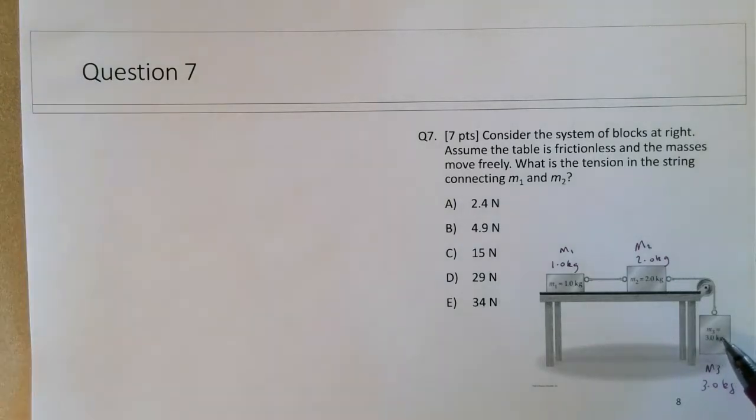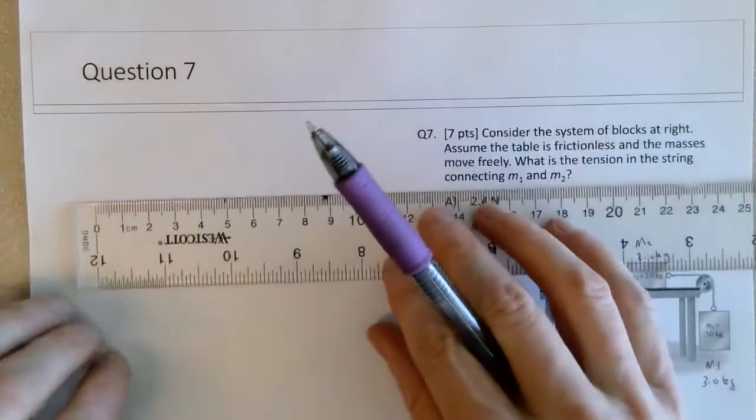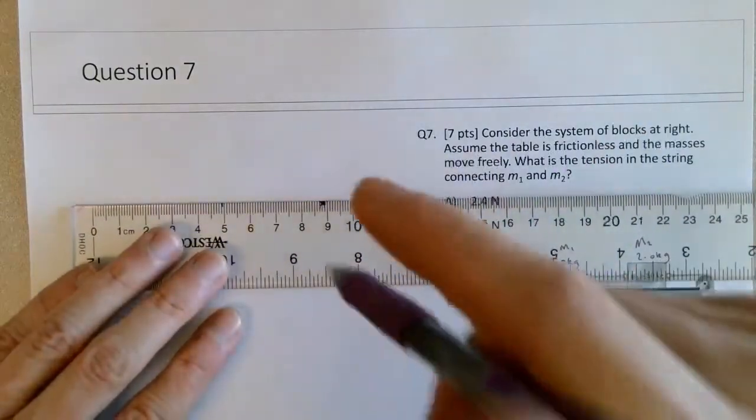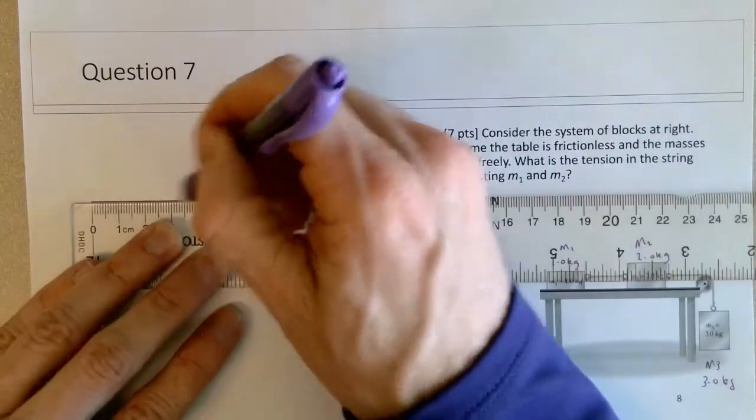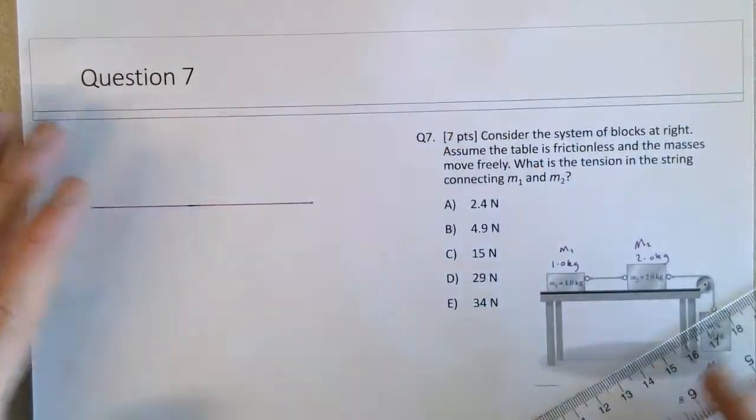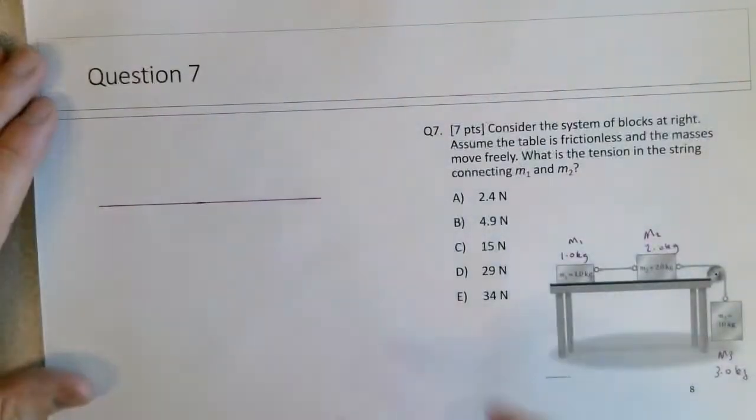So if I think about the system, the 1, the rope, and sort of fudge the details around the pulley, I can treat this as equivalent to a horizontal frictionless surface and we're pulling three blocks.